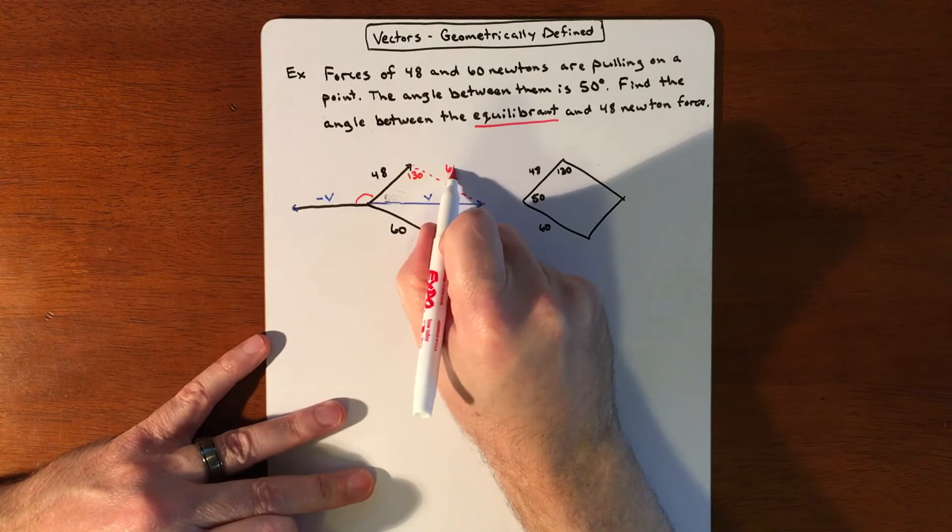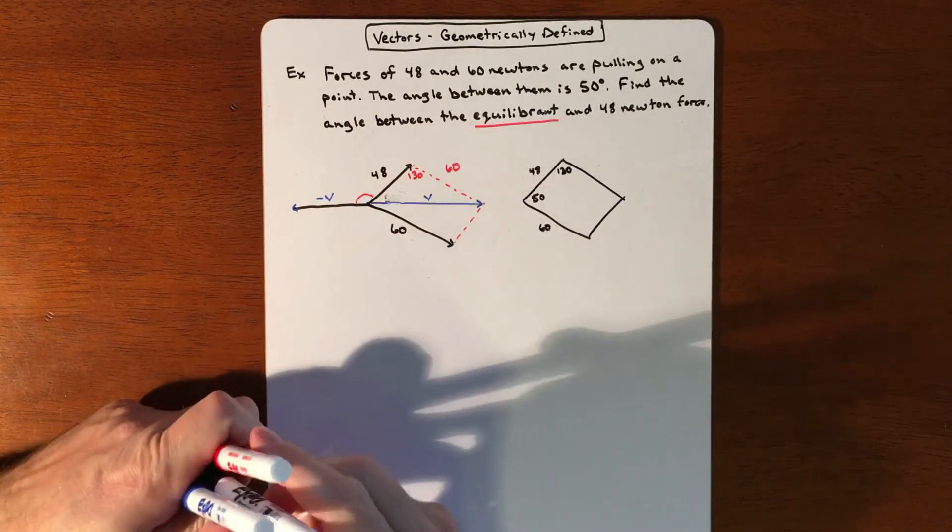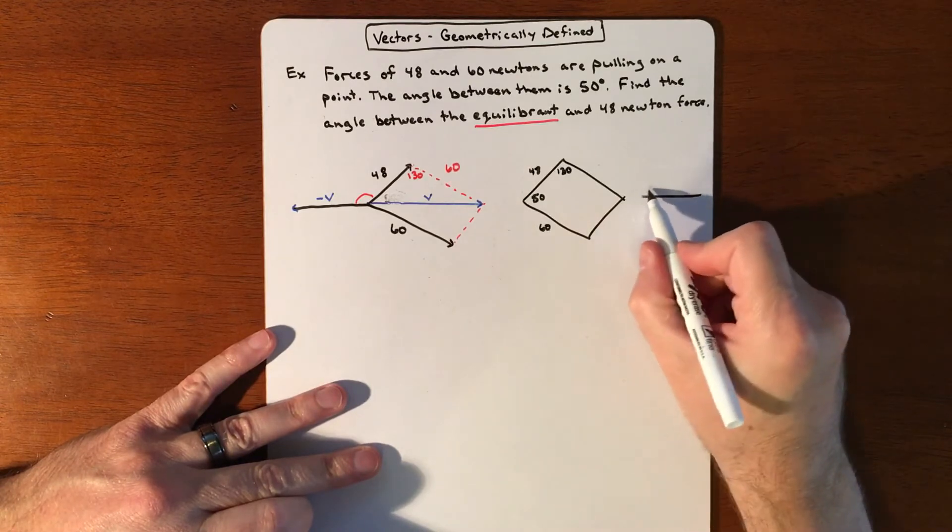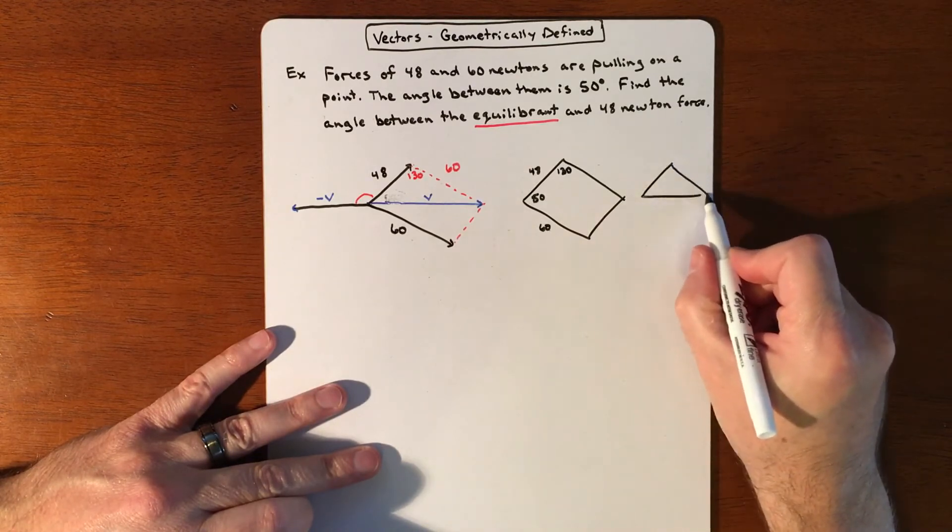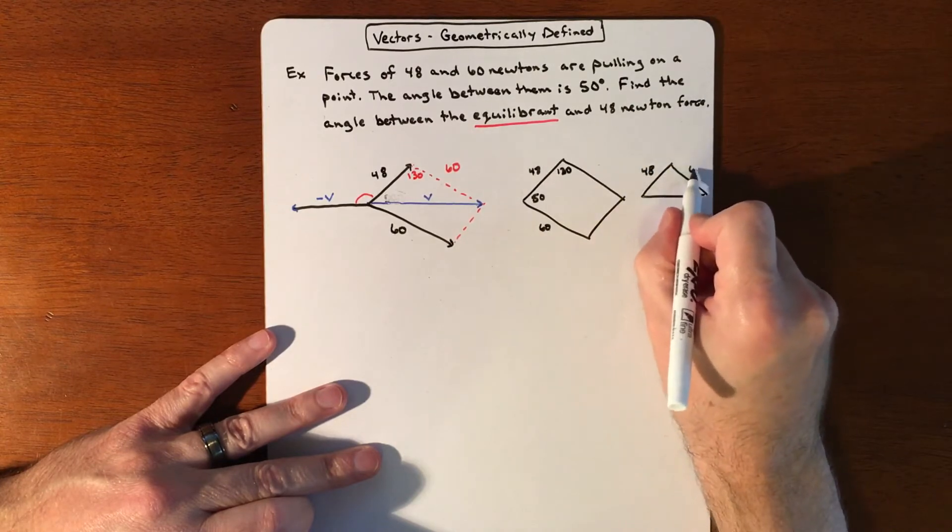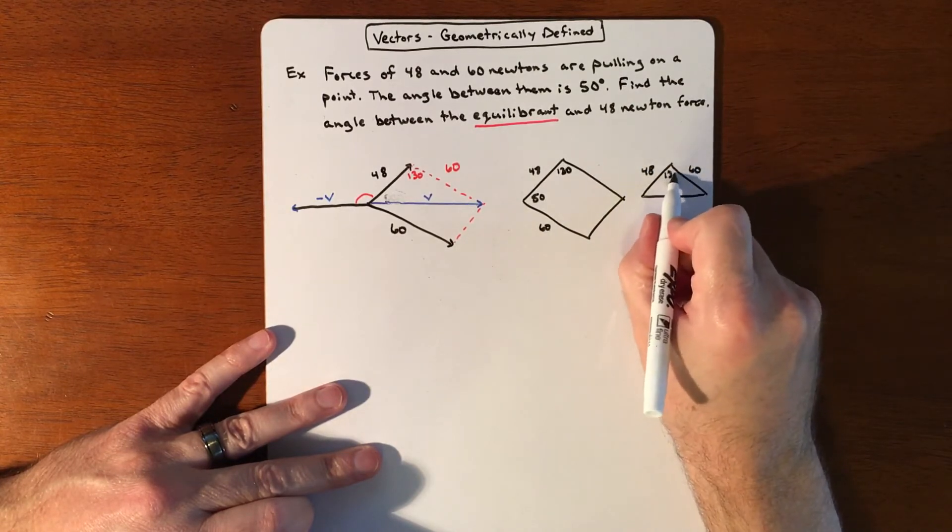Then we are looking at a triangle of, I'll do my best here, that we got 48 and we got 60 and we have 60 and we have 130 degrees between it.